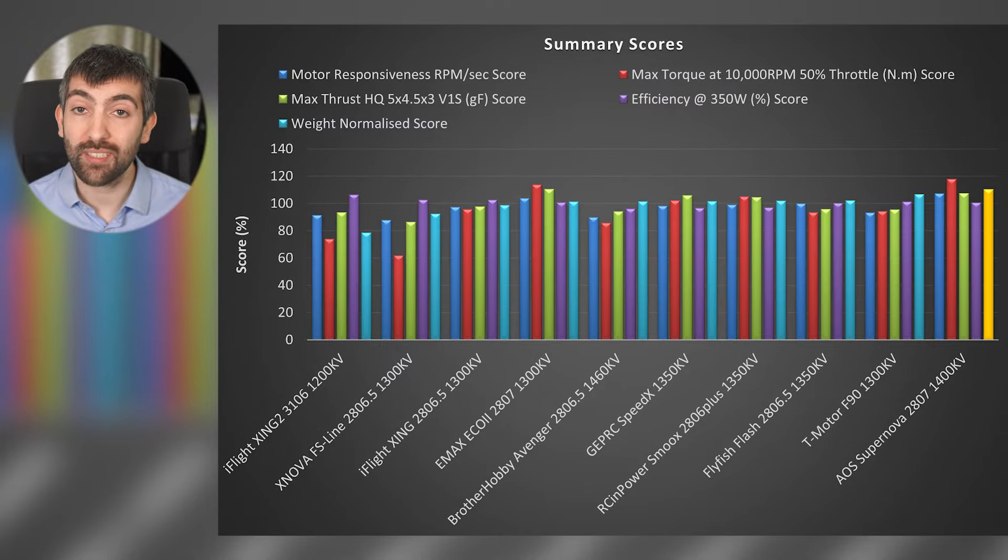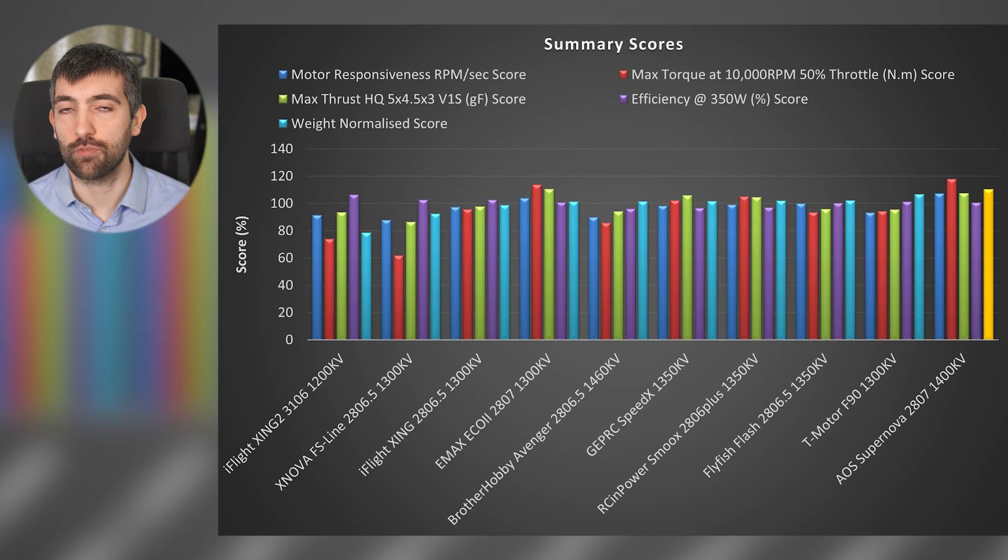We've got thrust, efficiency, torque, and responsiveness, and I've also added a total score, which is the average of all of the scores, and a weight-normalized score, which is the total score multiplied by the ratio of motor weights. That allows motors that are slightly lighter to compete with motors that are slightly heavier by taking into account the relative weight.